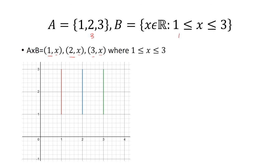Looking at the first case, X equals 1, so we go to X=1 on the axis. The Y value is between 1 and 3, so we draw a vertical line from 1 to 3. Then for the second case, X=2 with Y between 1 and 3 — we draw that out. Finally, X=3 with Y between 1 and 3. So we end up with three vertical lines.